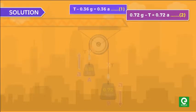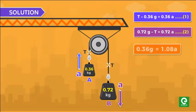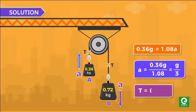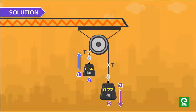By adding and subtracting equation 1 and 2, we get acceleration a equal to g by 3 and tension T equal to 0.48g.